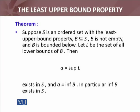Suppose S is an ordered set with the least upper bound property. I have explained that any bounded set's supremum will belong to S. B is not empty, and B is bounded below — that is another condition. Let L be the set of all lower bounds of B. Then A equals the supremum of L exists, because S satisfies the least upper bound property, and furthermore, the infimum of B is in fact A.